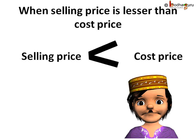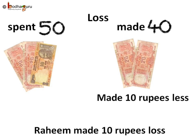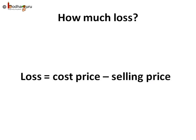But if he earns lesser money than the cost price by selling the sandwiches, he wouldn't be able to save money. He would need to add money from his savings to buy vegetables for the next day. Like when he earned only 40 rupees after spending 50 rupees, we can say he made a loss. We can say easily that he is 10 rupees short from what he spent. So the loss is 10 rupees. Loss is cost price minus selling price.